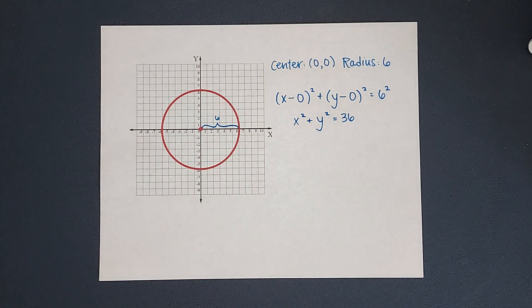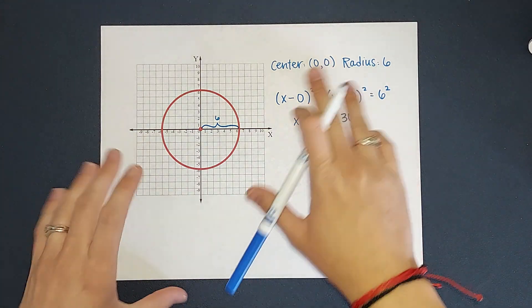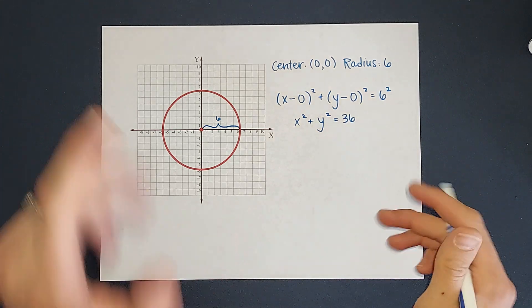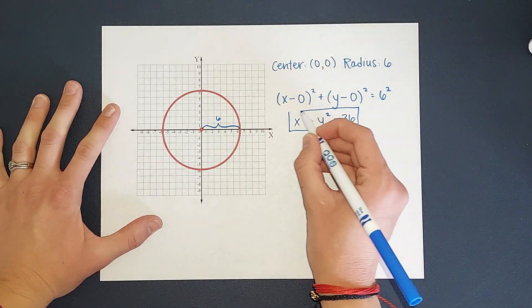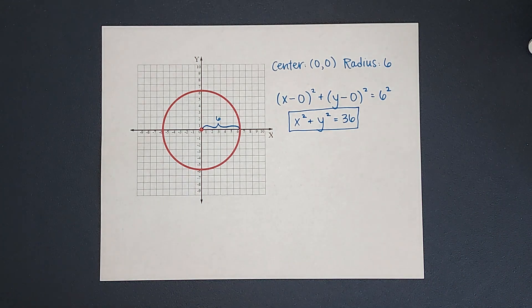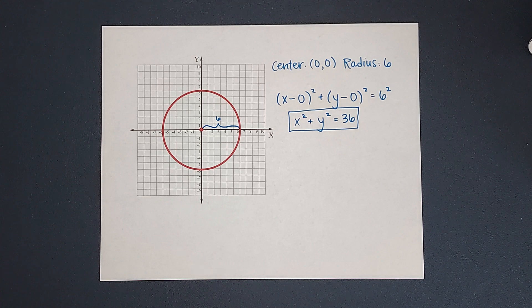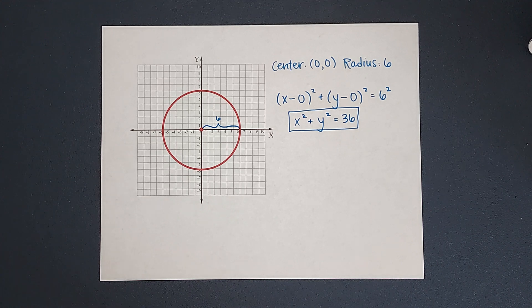Now if you want to see a graph where the center isn't zero, zero, I'll link a video for you in the corner. But in this case, our center was zero, zero, and that is what our equation looks like. I hope this made sense. If you need to check out any of these other videos, go for it. Thanks, bye.